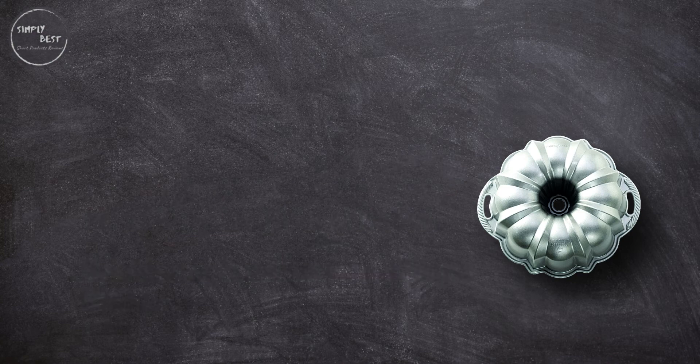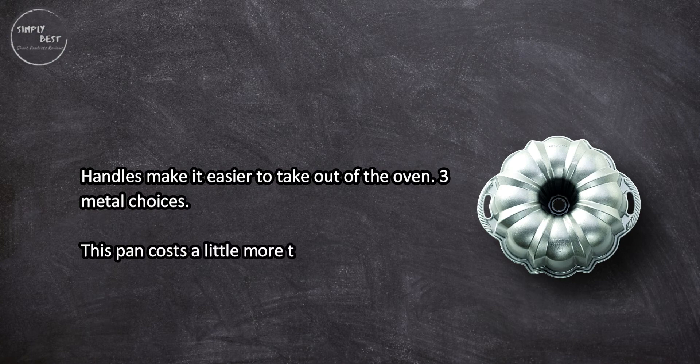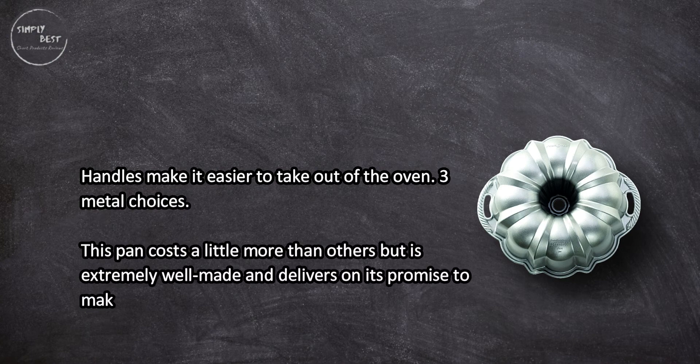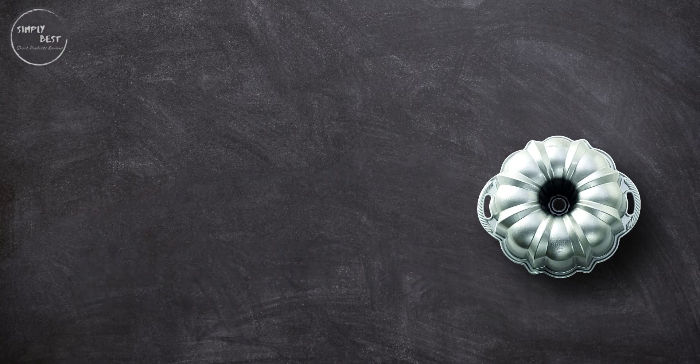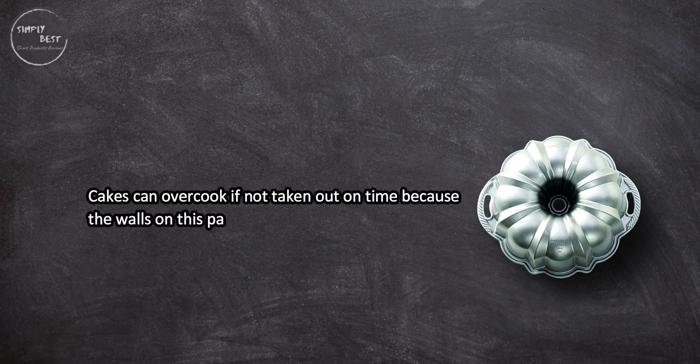Handles make it easier to take out of the oven. Three metal choices. This pan costs a little more than others but is extremely well made and delivers on its promise to make the perfect bundt cakes. Cakes can overcook if not taken out on time because the walls on this pan are thick and hold the heat after you remove it from the oven. Check at the minimum cook time.